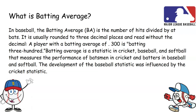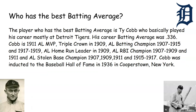Who has the best batting average? The player with the best batting average is Ty Cobb, who played his career mostly with the Detroit Tigers organization. His batting average was .336.